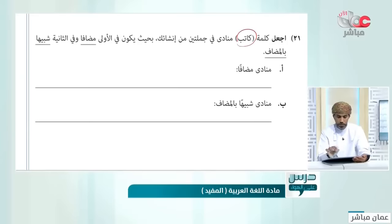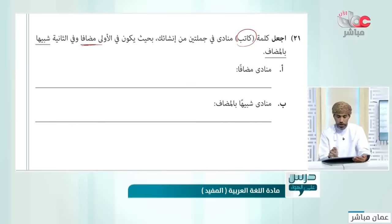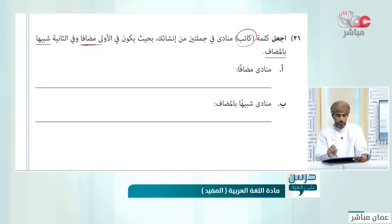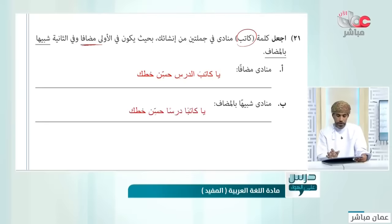اجعل من كلمة 'كاتب' منادى في جملتين: في الأولى مضافاً وفي الثانية شبيهاً بالمضاف. للمضاف لا بد من التركيب الإضافي: 'يا كاتبَ العدل'. أما في الشبيه بالمضاف لا بد أن ينون بالنصب: 'يا كاتباً درساً' أو 'يا كاتباً للدرس'.